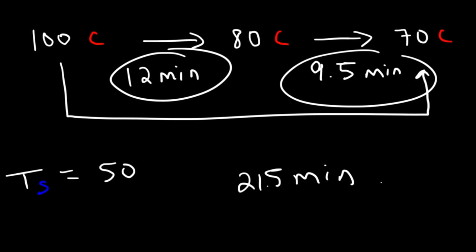Notice that whenever the temperature gets close to the surrounding temperature, the rate of temperature change decreases — the temperature decreases more slowly. In the first 12 minutes the temperature went down by 20 degrees Celsius, but in the next 9.5 minutes it only went down by 10. As the difference between the object and the surroundings decreases, the rate of temperature change decreases as well.